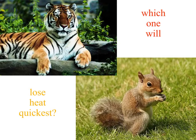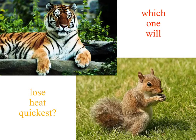One question that often comes up when we think about diffusion is to do with the surface area to volume ratio. I ask my students this question: which one of these two organisms, the tiger or the squirrel, would lose heat the quickest? It's all to do with surface area in relation to volume - an important thing to consider when we look at diffusion. Let's work out which of these two creatures would lose heat the quickest.